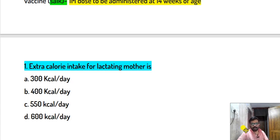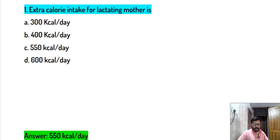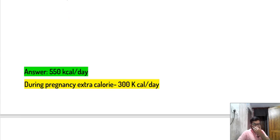The extra calorie intake for a lactating mother is 550 kilocalories per day. During pregnancy, the extra calorie requirement is 300 kilocalories per day. But for a lactating mother, this goes up to 550 calories per day.